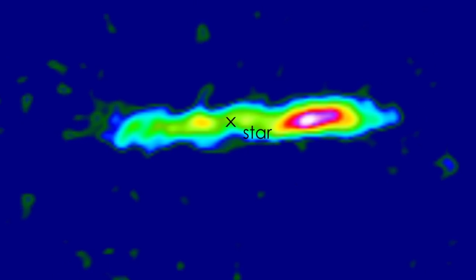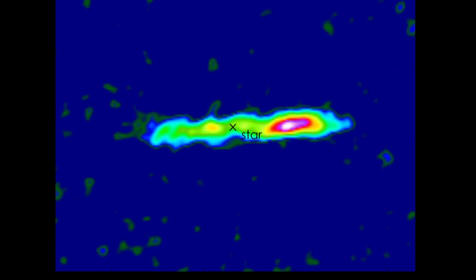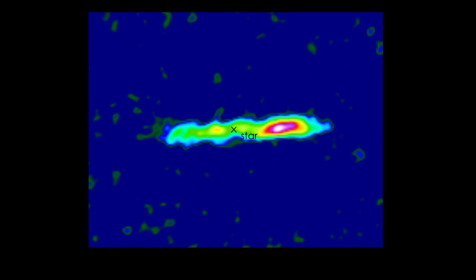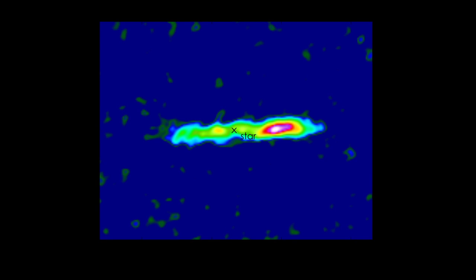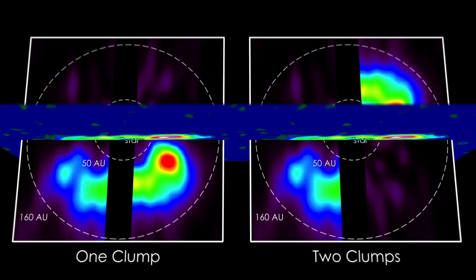From our data, we can tell that much of the carbon monoxide is in one or two massive clumps, which was very surprising. Because we're viewing the disk edge on, we can't be sure if it's one or two. Regardless, the comets supplying the gas must also be concentrated into clumps. How could this happen?